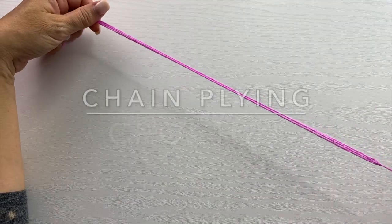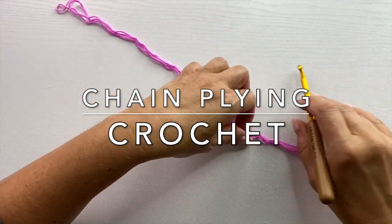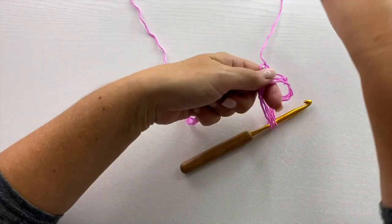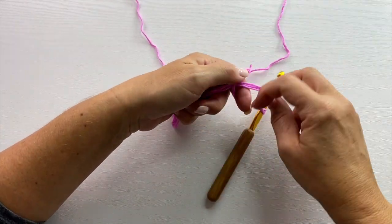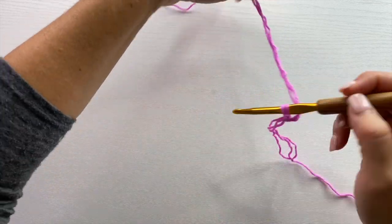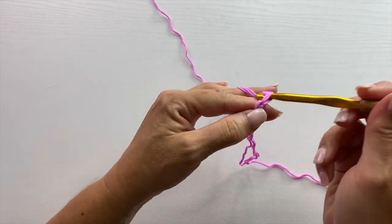So if we're going to start by crocheting with it, we can tie the yarn to our crochet hook, and as we begin crocheting with this, we'll start with a beginning chain.